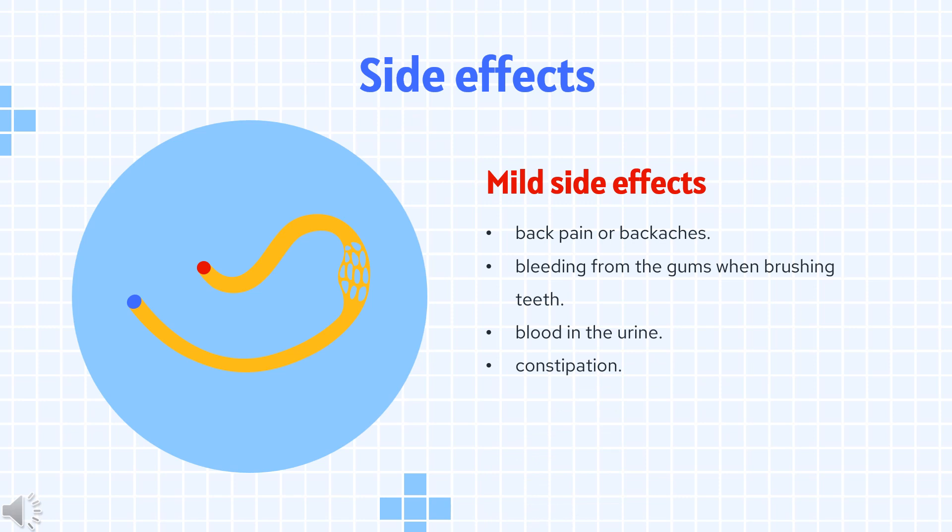Side effects include: abdominal or stomach pain or swelling, back pain or backaches, bleeding from the gums when brushing teeth, blood in the urine, constipation, coughing up blood, severe or continuing headaches, and heavy bleeding or oozing from cuts or wounds.